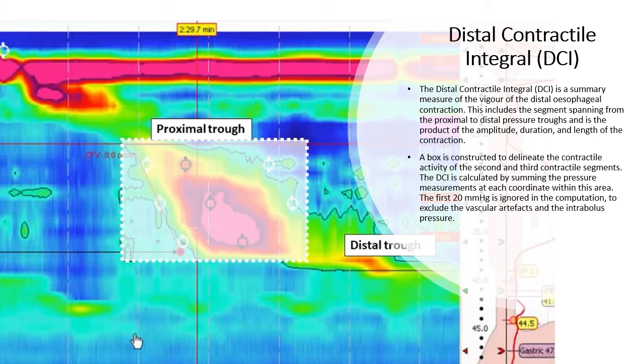A box is constructed to delineate the contractile activity of the second and third contractile segments. The DCI is calculated by summing the pressure measurements at each coordinate within this area. The first 20 mm is ignored in the computation to exclude the vascular artifacts and intrabolus pressure.